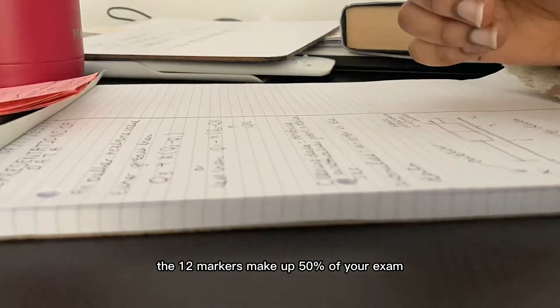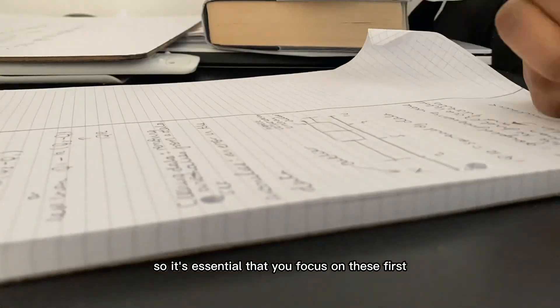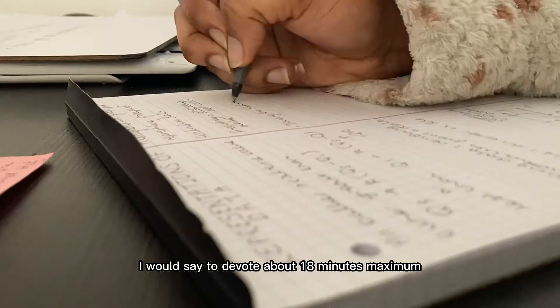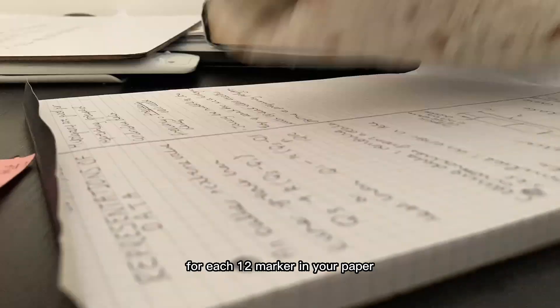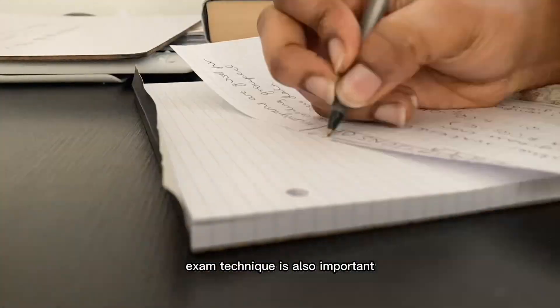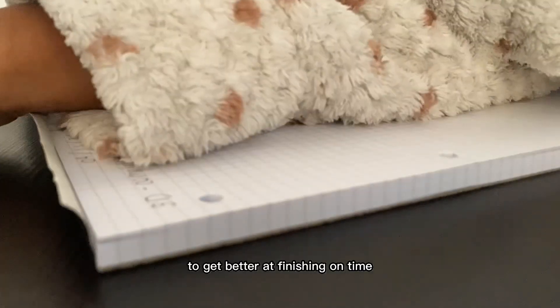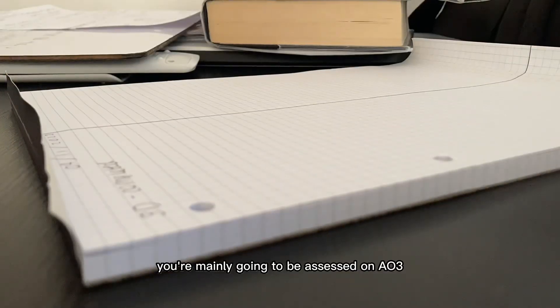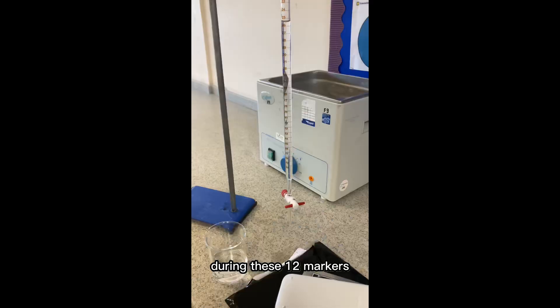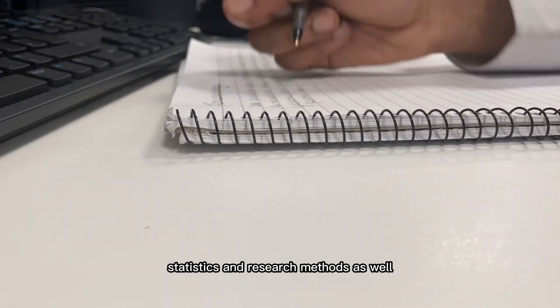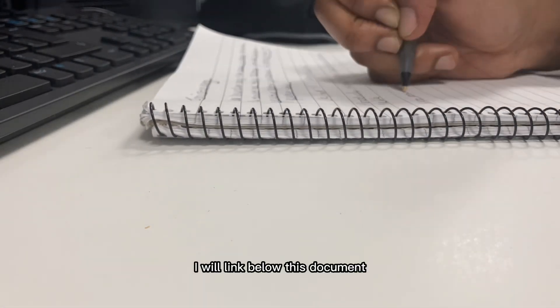The 12 markers make up 50% of your exam, so it's essential that you focus on these first in your exams. I would say devote about 18 minutes maximum for each 12 marker in your paper. Exam technique is also important, so try and do these under timed conditions to get better at finishing on time. You're mainly going to be assessed on AO3 during these 12 markers, so you need to know your key terms, sociological perspectives, statistics, and research methods as well.